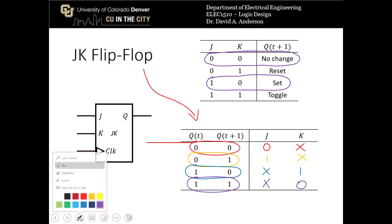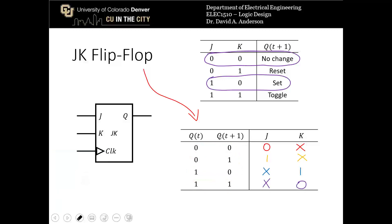This truth table for the J and K inputs given the transition from the old state Q to the new state Q is very important. We're going to use it to design state machines using JK flip-flops.